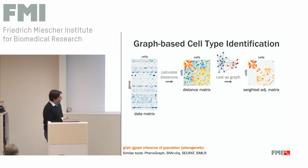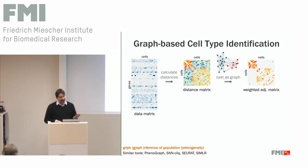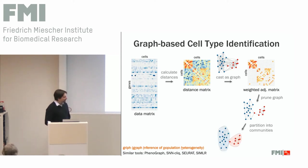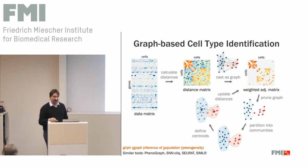Then we cast it as a graph. You can interpret this matrix as an adjacency matrix where these values give you the weight for the edge between a given pair of cells. We cast it as a sparse graph — this is quite important. We want to get rid of most of these edges and only keep edges between cells that are really similar. Once we have this sparse graph, we can apply existing tools or algorithms that detect communities in graphs, and we can even iterate that process by using the centroids of identified communities as reference points, which improves accuracy.